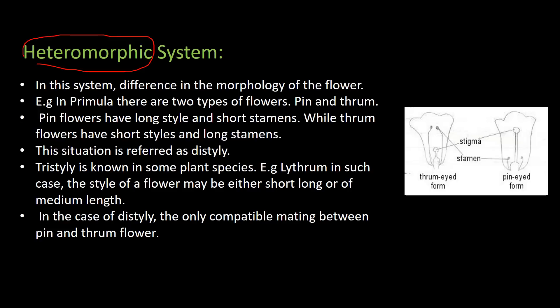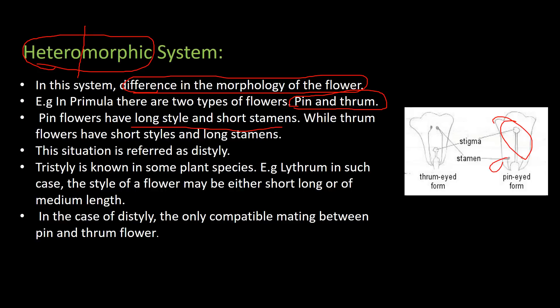In the heteromorphic system, as the name suggests, there is a variation in the morphology of the flower. For example, in species like Primula (primrose), there are two types of flowers: pin and thrum. Pin flowers have a long style and short stamens, while thrum flowers have a short style and long stamens. This situation is referred to as di-stylee.